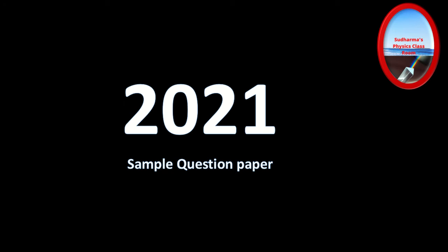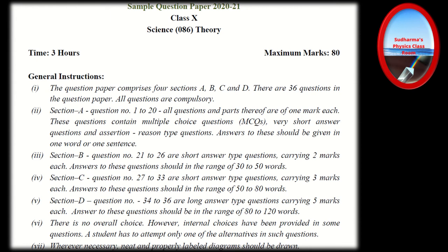We will come to know what changes CBSE has made in the 2021 question pattern and what types of questions we are going to get. The exam is three hours, maximum marks 80, out of which physics has 26 marks. It is very easy to score the complete 26 marks — when you see the questions, you will find they are not difficult at all, as we have already discussed all these kinds of questions in the classes. I have also made a video on how to prepare for CBSE board exams — the link is in the description box.